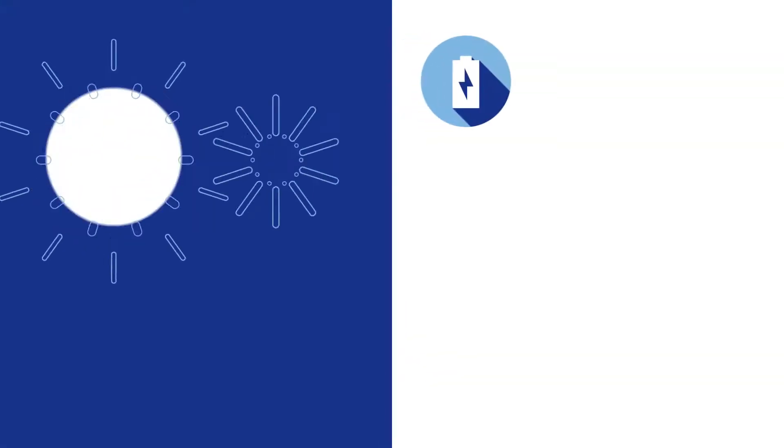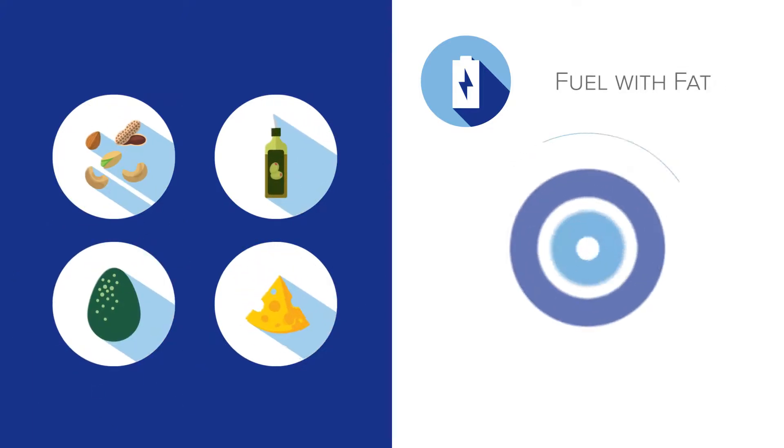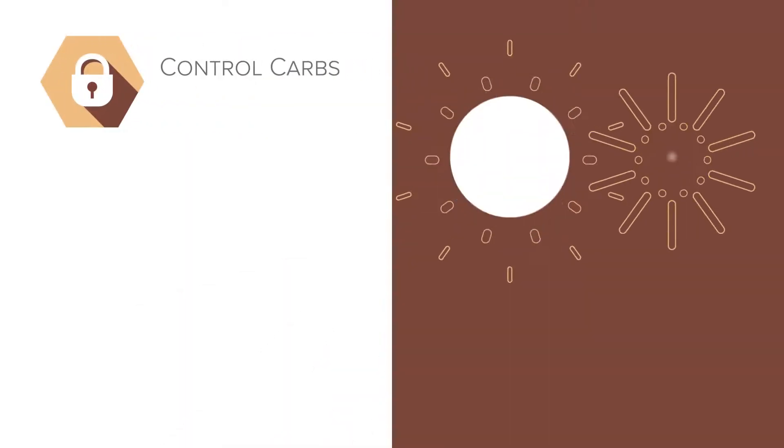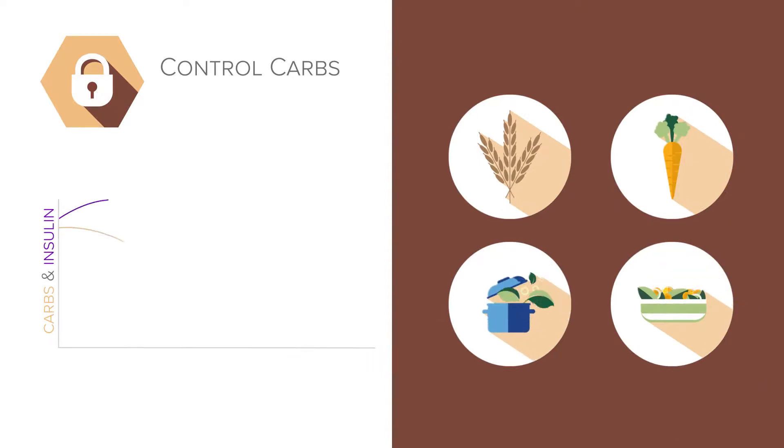Often, hunger and cravings sabotage the most well-intentioned health plans. Fat also has no insulin response and digests more slowly than carbohydrate, helping us feel fuller longer. By limiting carbohydrate consumption and focusing on less refined carbohydrates, we allow insulin levels to fall, which enables metabolic flexibility, allowing our bodies to access fat stores to provide the energy required to function.